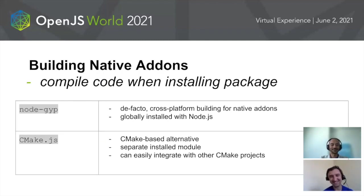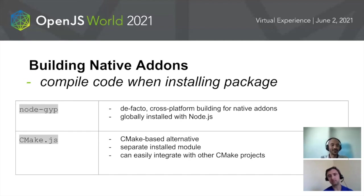Building native apps: when you need to compile your C++ code to run on Node, there exist multiple ways to compile your code. One method is NodeGip. This is the de facto method that exists whenever you install Node. This build system is installed on your machine as well, and allows any dependencies that you install to compile their add-ons.